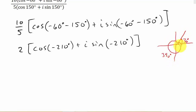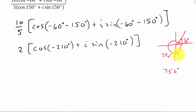Coterminal angles have the same terminal side, just different amounts of rotation. The way that we get coterminal angles — for instance the 30 degrees — you add 360 to it. You can also subtract 360. If we wanted to, we could go around again and add 360 again, and we would get an angle of 750 degrees. And 750 degrees is coterminal with 30 degrees, so all three of these angles have the same sine, cosine, and tangent values.